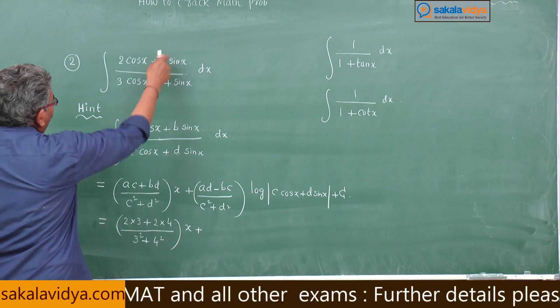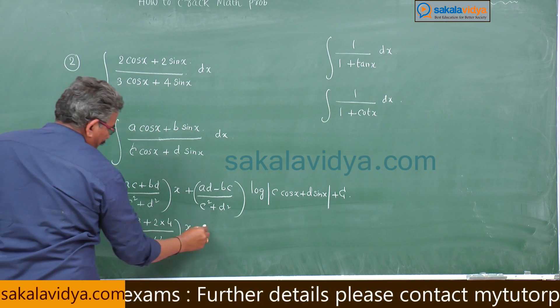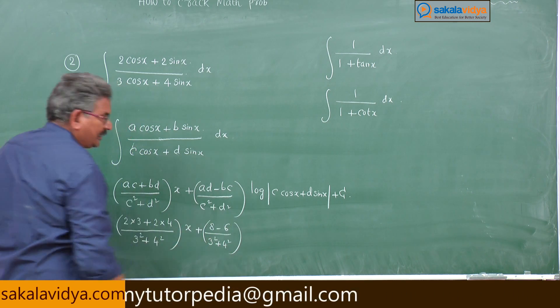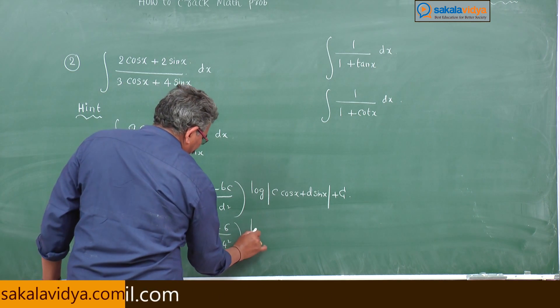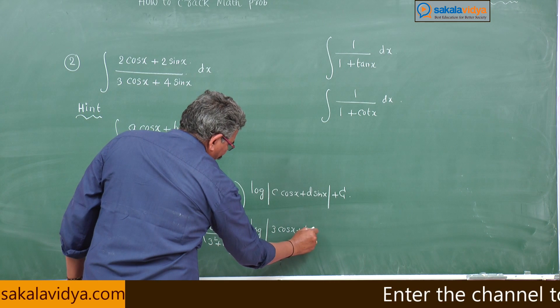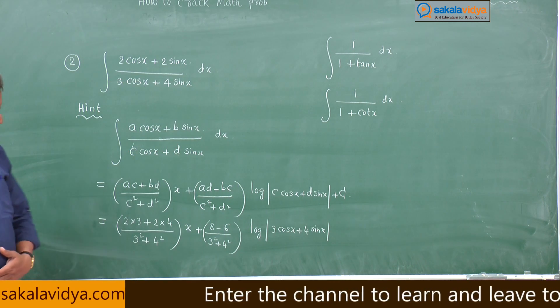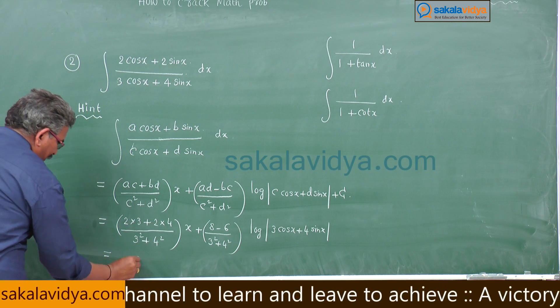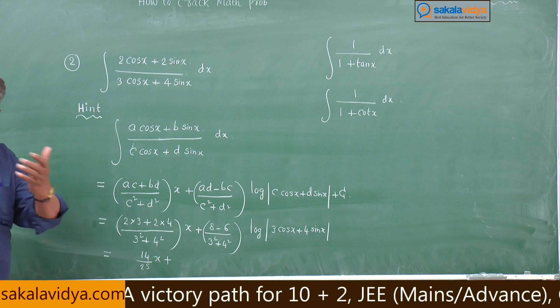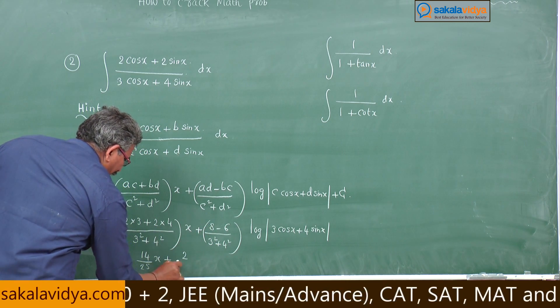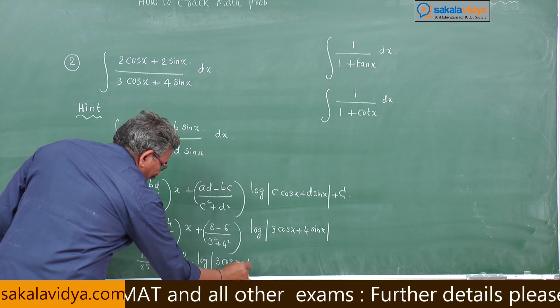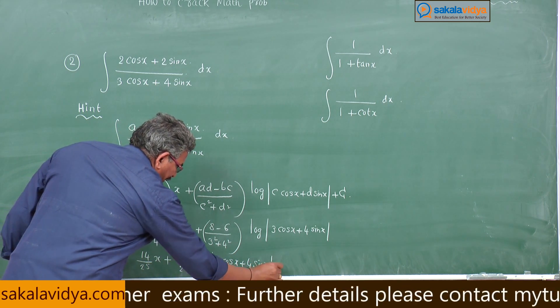That means determinant of 2, 2, 3, 4 - 2 by 2 matrix - 8 minus 6 by 3 square plus 4 square, log mod of 3 cosx plus 4 sinx. Now this is 6 plus 8 equals 14, 3 square is 9, 4 square is 25...